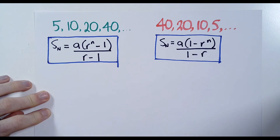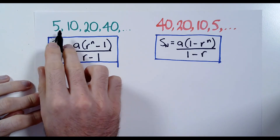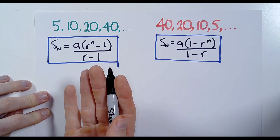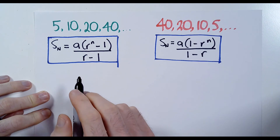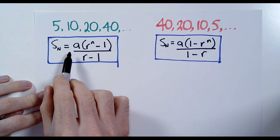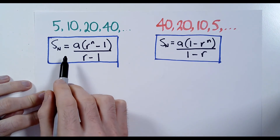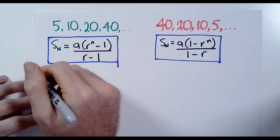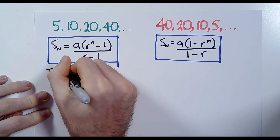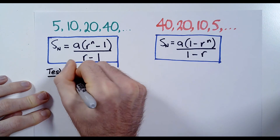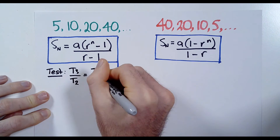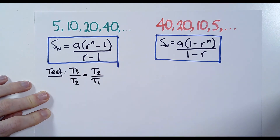Let me start with this side. We have a pattern here, a sequence: 5, 10, 20, 40, and so on. The first question is, is this even a GP? You would have to address this first in an exam — you can't just assume it's a geometric progression. You only apply this formula if it is in fact a geometric progression. The test is that the third term divided by the second term is in the same ratio as the second term divided by the first term.